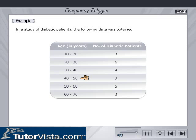9 in the age group of 40 to 50 years, 5 in the age group 50 to 60 years, and 2 in the age group 60 to 70 years. Represent this data by a frequency polygon.